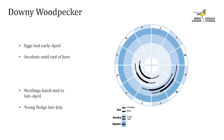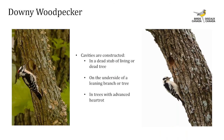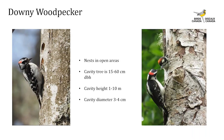The downy woodpecker is another non-migratory woodpecker. They begin laying eggs in early April and continue incubating until the end of June; the young hatch as early as mid to late April and fledge from the nest in late July. Cavities are constructed on the underside of a leaning dead stub of a living or dead tree in advanced stages of heart rot, or in trees infected with fungus which makes the wood easier to excavate. The cavity tree diameter ranges from 15 to 60 cm DBH, cavity height from 1 to 10 meters, and cavity holes are small — about 3 to 4 cm in diameter.